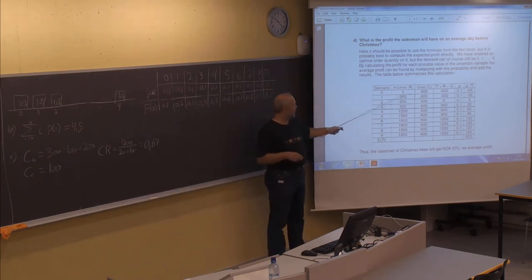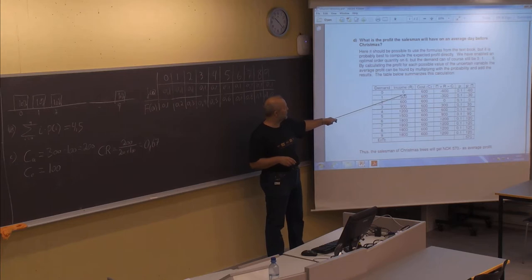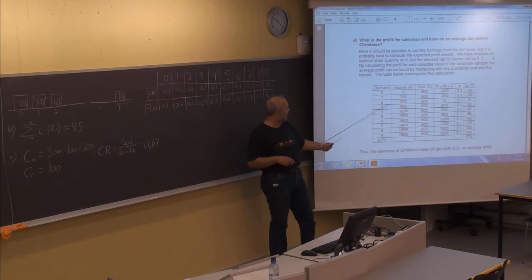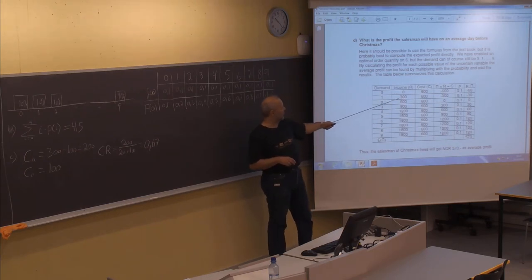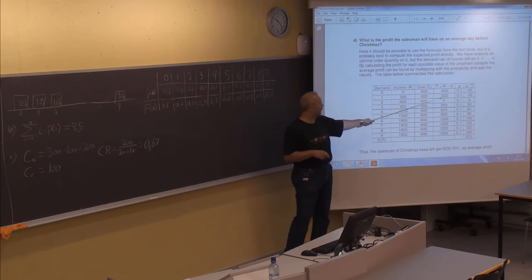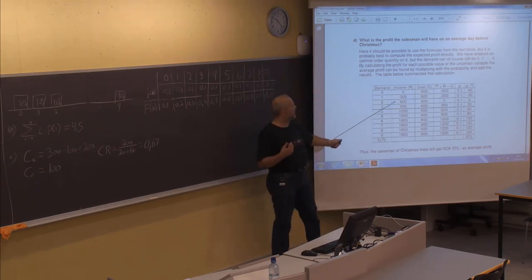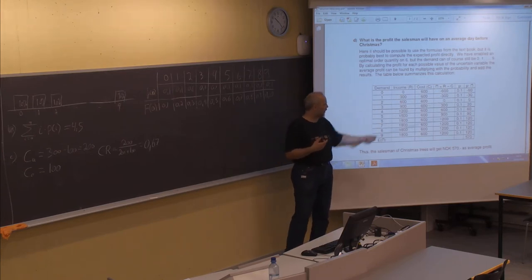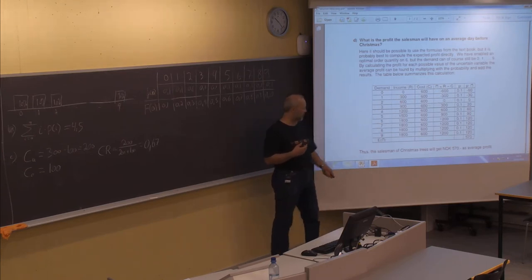In 10% of situations you will have no income at all and you will lose all money. In another 10%, you will sell only one tree and have an income of 300, giving a total loss of 300. If you sell two trees you will break even, and that will also happen in 10% of situations.